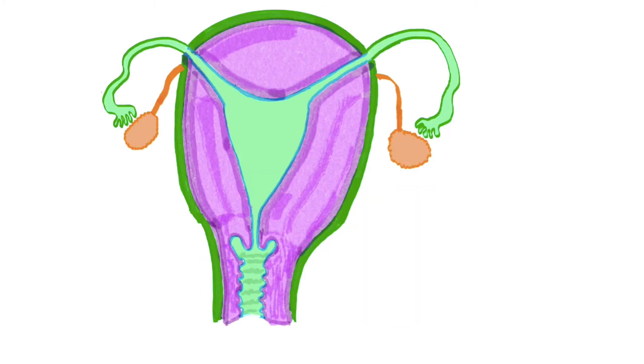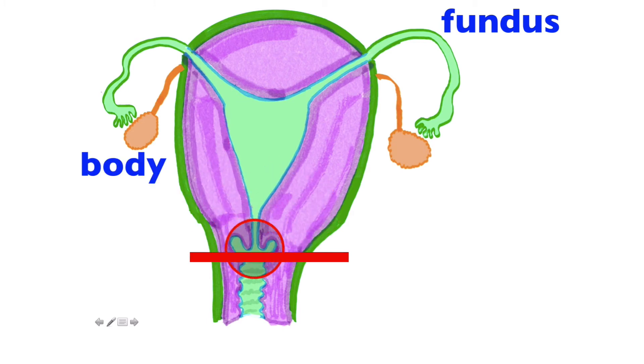So I titled this video Uterus Plus because we're mainly going to focus on the uterus, but we're also going to talk about the vagina and the uterine tubes. Everything above the line here and up to here is the uterus. The uterus includes the fundus, which is this curved region, the majority of it we refer to as the body, and the most inferior aspect right here is the cervix.